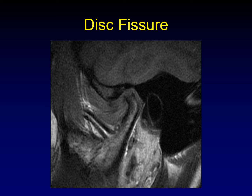For the intraarticular disk, T1 weighted images are the appropriate sequence. You're looking for bright lines through the otherwise very dark disk — horizontally oriented lines representing fissures or tears within the disk. It is difficult radiologically to distinguish a simple fissure from a true tear, but these findings indicate severity of degenerative disease affecting the disk and loss of its normal morphology.